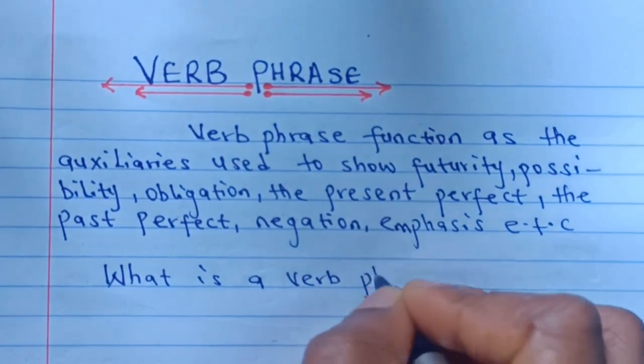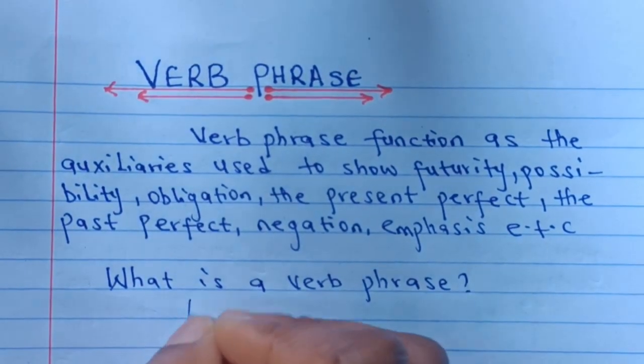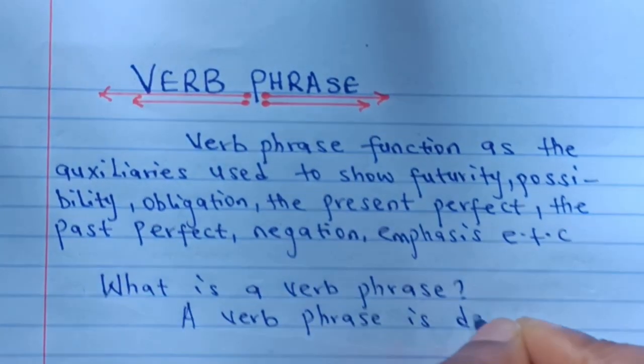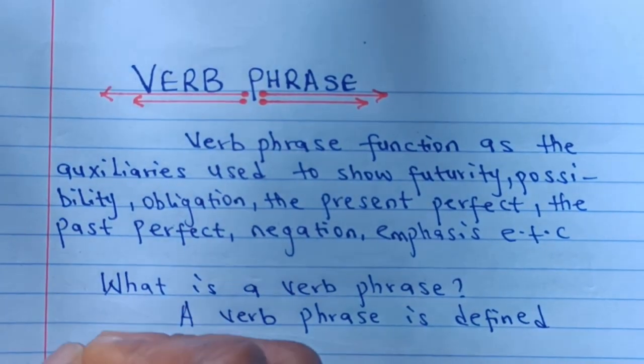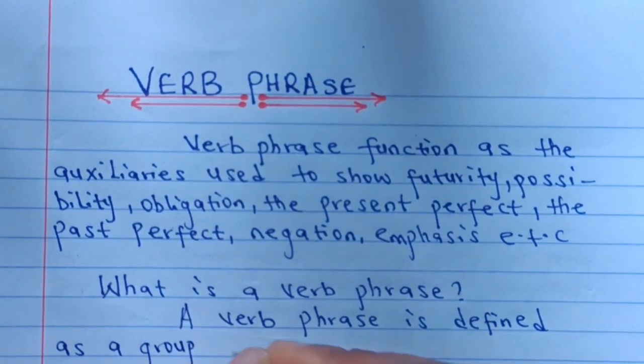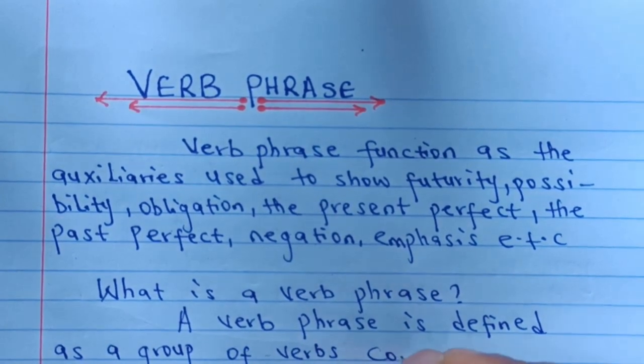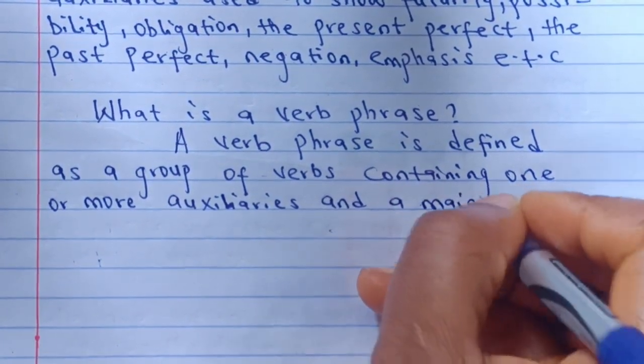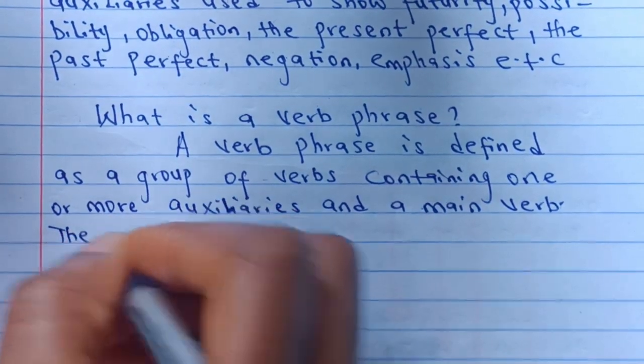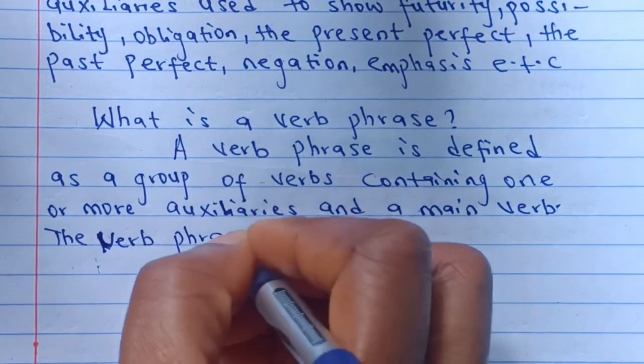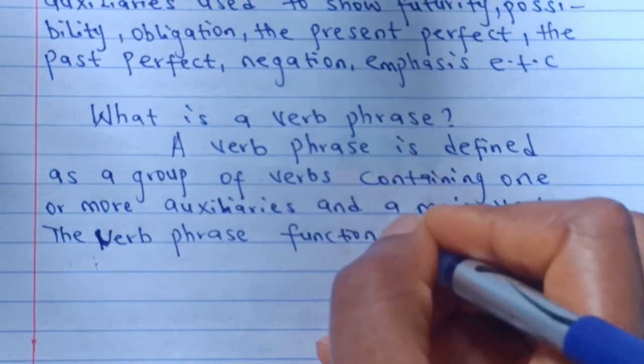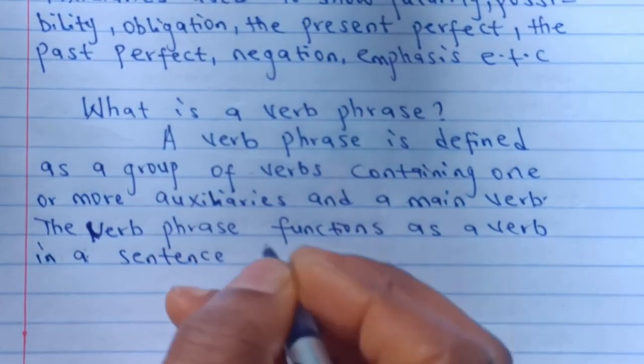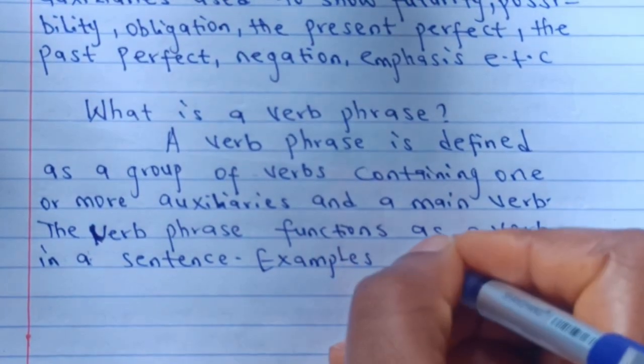Now what is a verb phrase? A verb phrase is defined as a group of verbs containing one or more auxiliaries and a main verb.